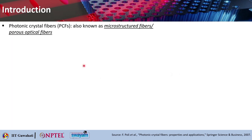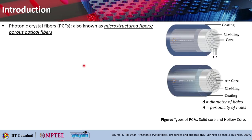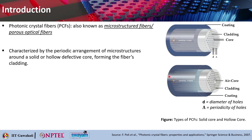Photonic crystal fibers, also known as microstructured fibers or porous optical fibers, typically look like this. There are two types of core: one is a solid core and one is a hollow core. You have a core, then a cladding, and then a coating which is basically a plastic protection for the fiber. The cladding has a periodic arrangement of microstructures, which is a 2D photonic crystal.